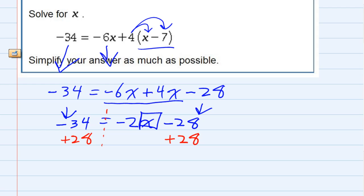Adding 28 to both sides on the right cancels the minus 28, leaving me now with just minus 2x. And on the left-hand side, negative 34 plus 28 gives me minus 6.